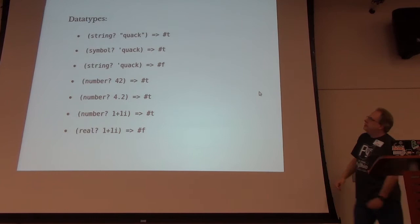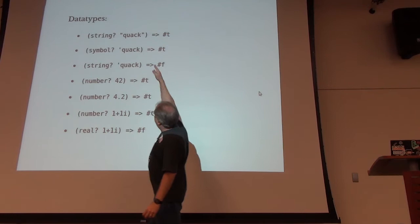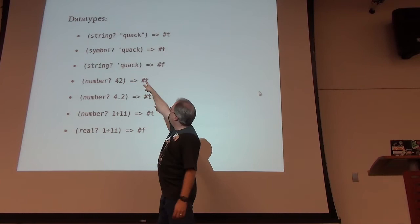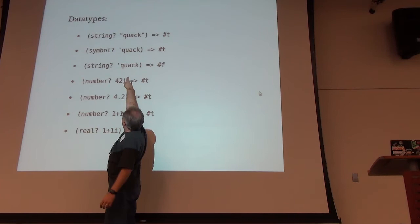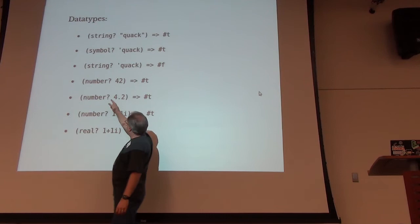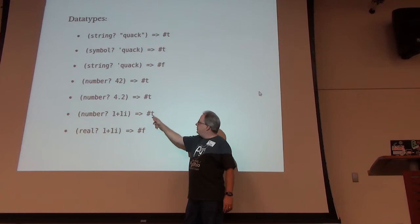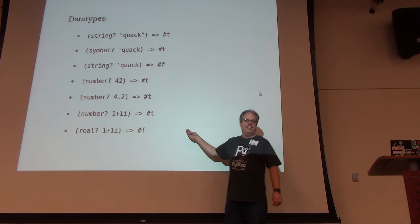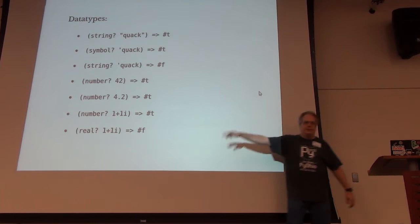Rather than explaining the data types directly, I'll have the functions demonstrate them. A string with double quotes — that's true, that is a string. A symbol with a single tick mark — that's also true. But a symbol is not the same thing as a string — symbols and strings are different. Numbers: an integer is a number; a float is also a number. Scheme even understands complex numbers, though a complex number is not a real number — it's an imaginary number.